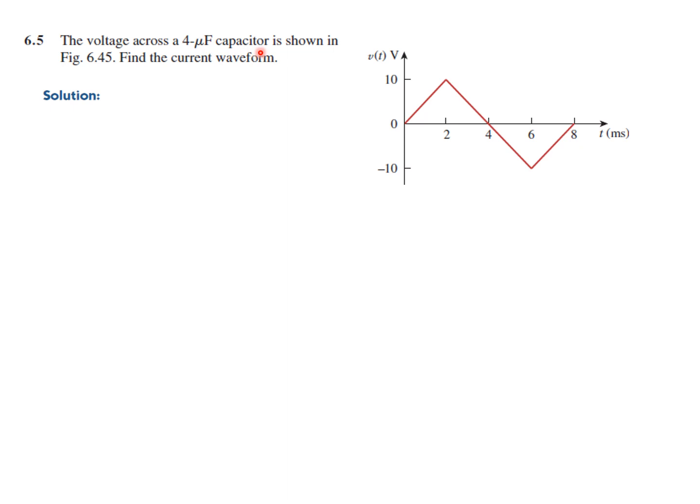The first question: the voltage across a 4 microfarad capacitor is shown in the figure — find the current waveform. The first step is to write the voltage waveform and then we'll find and plot the current waveform. If you recall from your FSC education, the equation of a straight line is y = mx + c, where m is the slope, given by (y₂ - y₁)/(x₂ - x₁). I have explained this in detail in my video for chapter 1, but here I will also explain it.